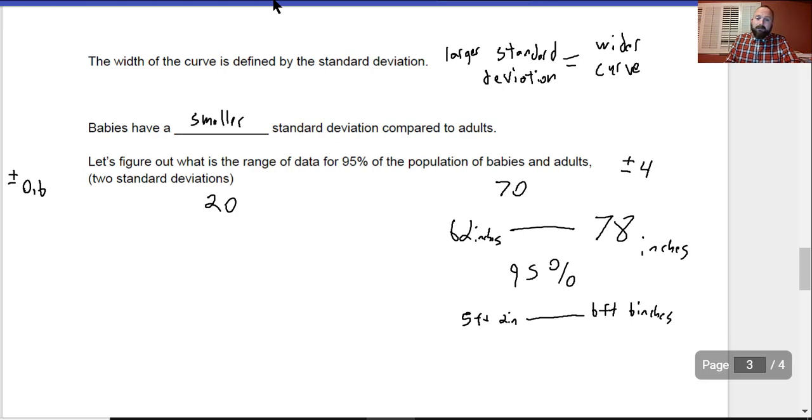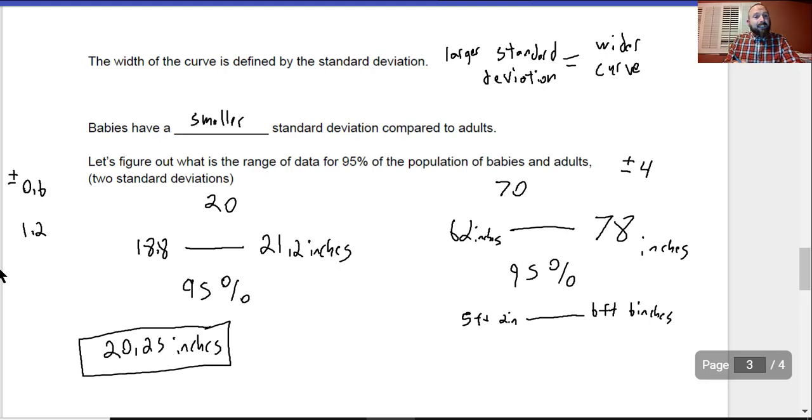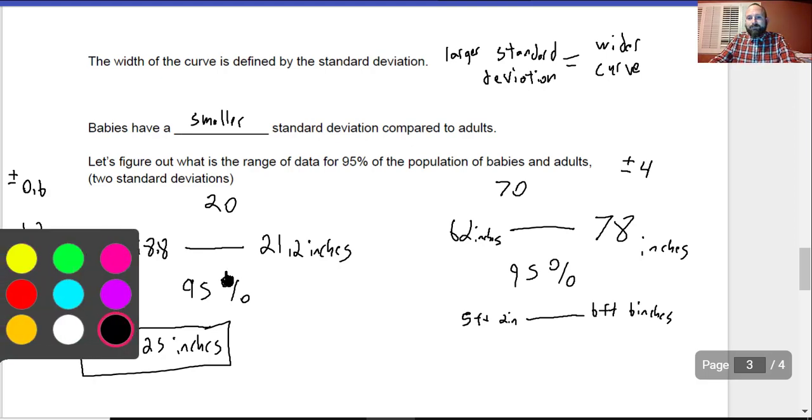Now for babies, two standard deviations would be 1.2. So 1.2 more and 1.2 less. 20 minus 1.2 is 18.8 inches. And going the other way would be 21.2 inches. So this is 95% of the data. I just looked at a baby book. My son was 20.25 inches when he was born. So here's the question: Is he in the 95% or is he outside the 95%? Yeah, he's within because he's between 18.8 and 21.2.